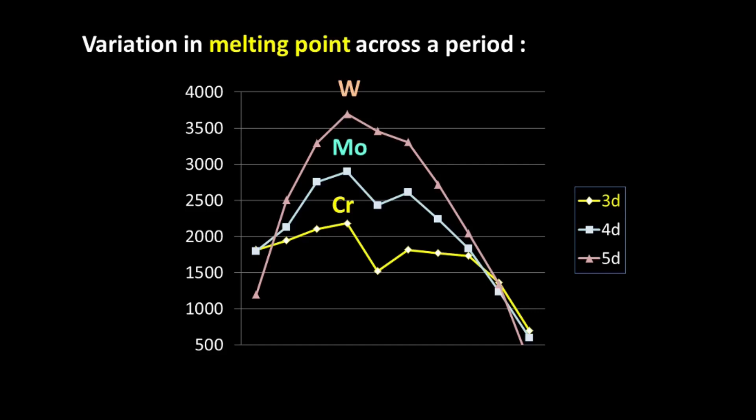Now if you look at this graph, you also realize that there is another important trend. As you are going from chromium to molybdenum to tungsten, the melting point is increasing. In fact, as you go from 3D to 4D to 5D, the melting point actually increases.